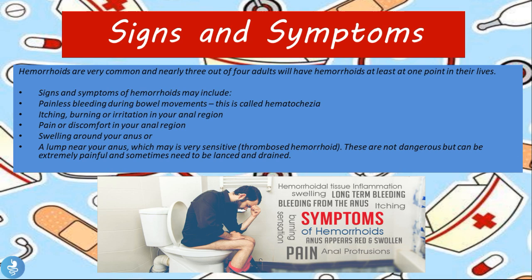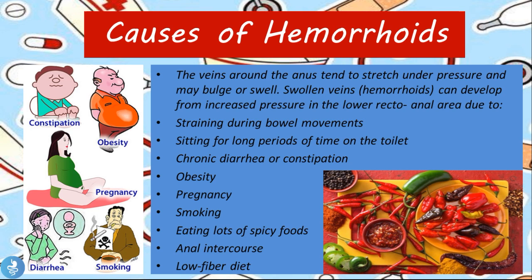Signs and symptoms of hemorrhoids may include painless bleeding during bowel movements, called hematochesia — meaning fresh blood per anus — as well as itching, burning, or irritation in the anal region, pain or discomfort, swelling around the anus, or a lump near the anus which may be very sensitive. This is a thrombosed hemorrhoid, which is not really dangerous but can be extremely painful and sometimes may need to be lanced and drained.